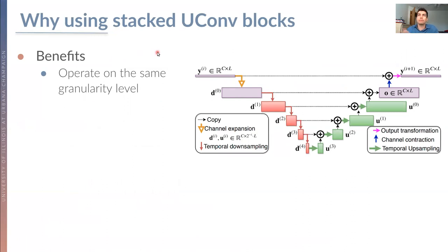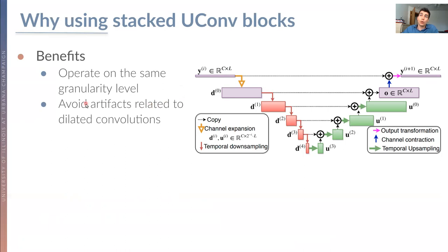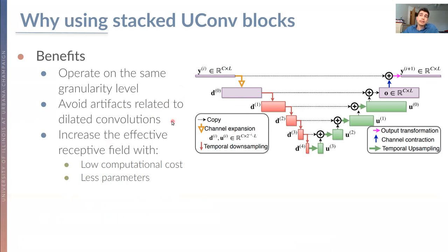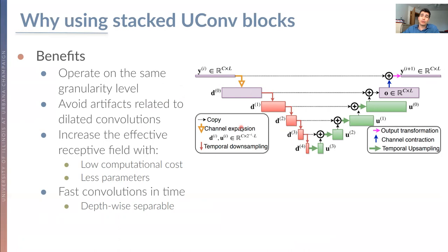Why should one use this kind of stacked U-Net blocks? First, we can operate on the same granularity level for input and output, which is extremely important. We can also avoid artifacts related to dilated convolutions, and we can increase the effective receptive field through downsampling and upsampling with low cost and fewer parameters. All these convolutions are computed very fast and are depthwise separable. Inside each block we aggregate features from multiple scale levels.